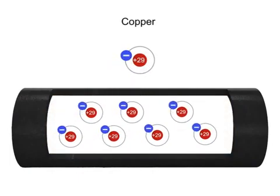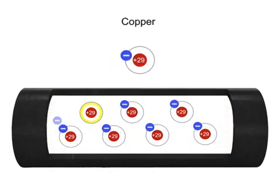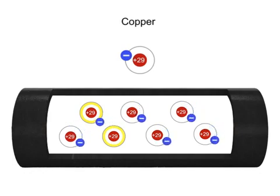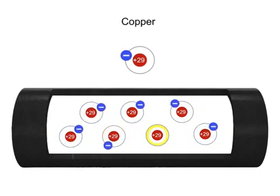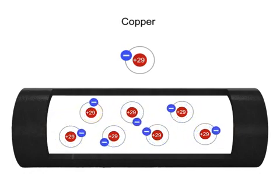In the absence of a voltage, the free electrons in a copper wire will drift in random directions from the orbit of one atom to another.